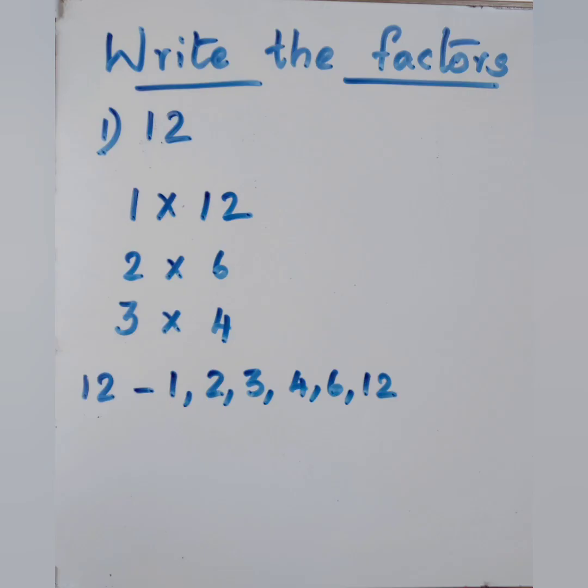Now, let us see some examples. 12: 1 into 12, 2 into 6 is 12, 3 into 4 is 12. All these numbers divide 12 exactly without leaving any remainder.